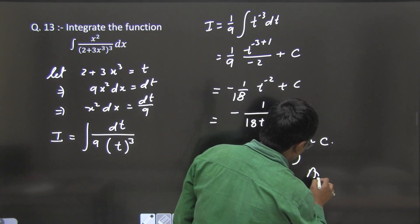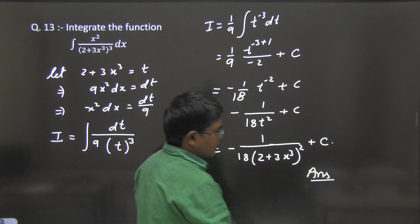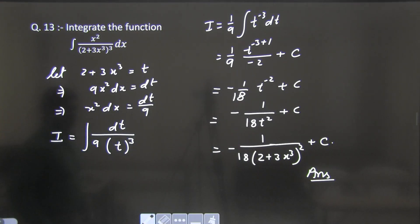what we get is -1/(18(2 + 3x³)²) + c. So this is your answer. Hopefully this solution is clear to you.